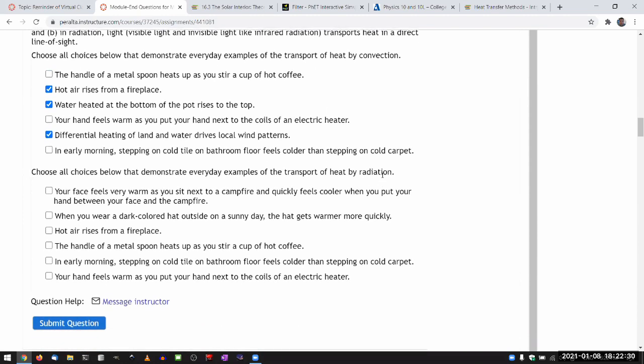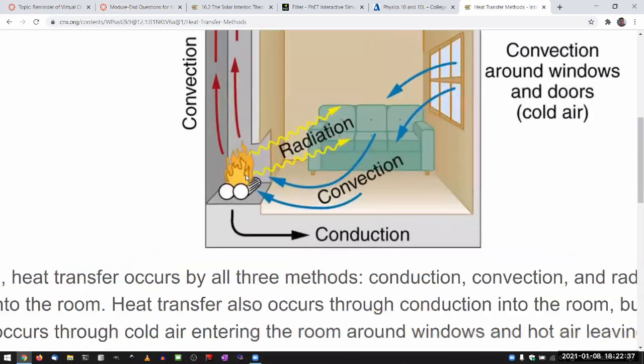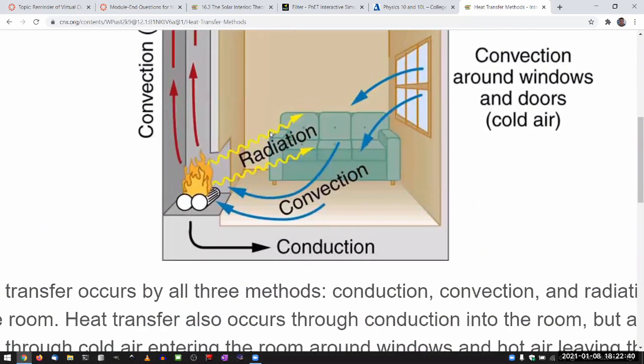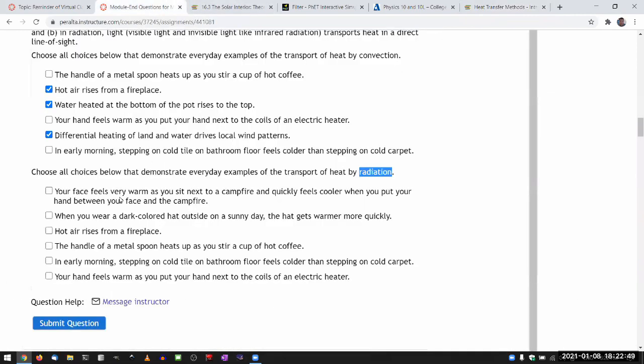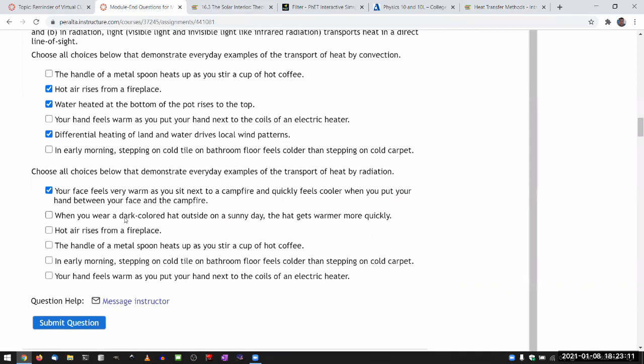Let me do radiation. What I want you to keep in mind is that it's a transfer of heat by light. So you need a line of sight. And there has to be a form of light, electromagnetic wave involved. It says your face feels very warm as you sit next to a campfire. That could be convection or radiation. And then it says and quickly feels cooler when you put your hand between your face and the campfire. So that's definitely radiation. If it's convection, you'd have to block the airflow. So this is radiation.